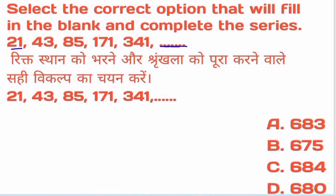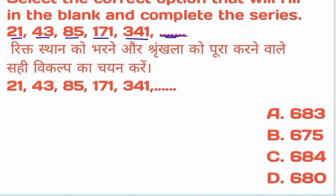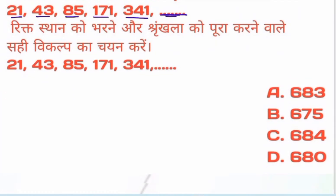The question involves the numbers: 21, 43, 85, 171, 341. Is 21 or 43 a number of people? I'm going to say 22 pounds. I'm going to say 43 is a number — 42.